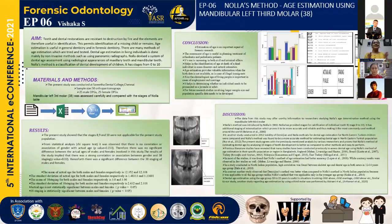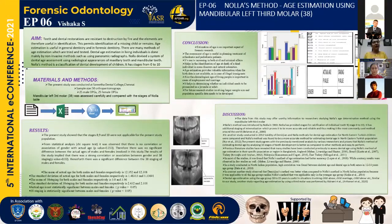Nolla divided the calcification of permanent dentition into stages: stage 0 — absence of crypt; stage 1 — presence of crypt; stage 2 — initial calcification; stage 3 — one third of the crown formed; stage 4 — two thirds of the crown formed; stage 5 — crown almost complete; stage 6 — crown completed; stage 7 — one third of the root formed; stage 8 — two thirds of the root formed; stage 9 — root complete but apex open; and stage 10 — root completed with apex closed.